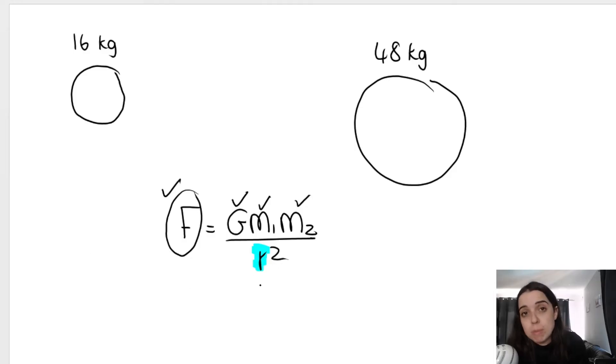R does not mean radius. In this formula, R means the distance between the centers of the two objects. So R goes from the center of this object to the center of this object. That entire distance over there, that whole thing, this entire distance is what we call R.